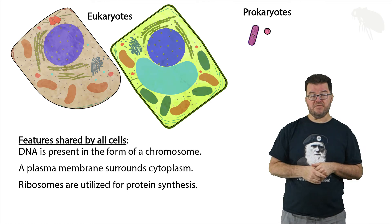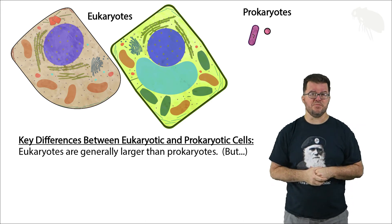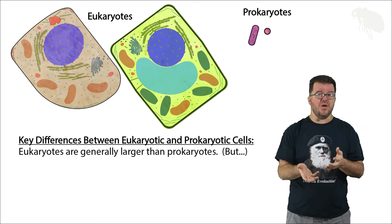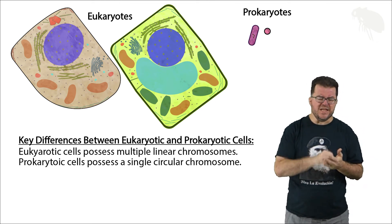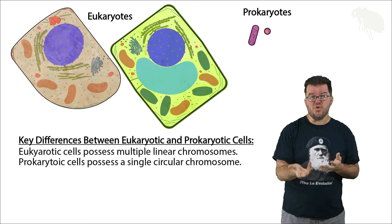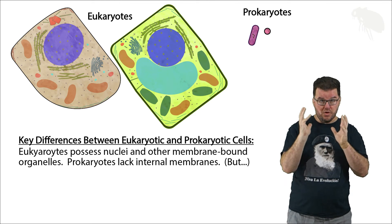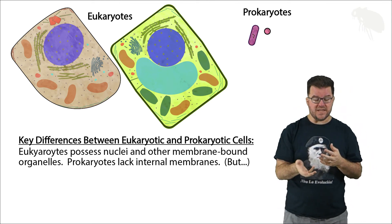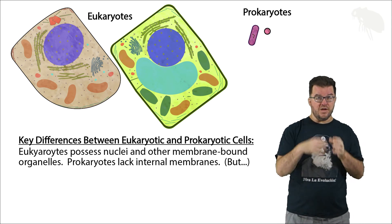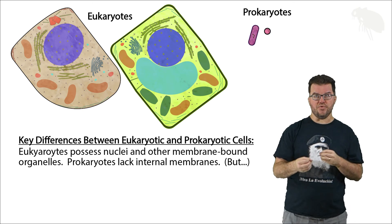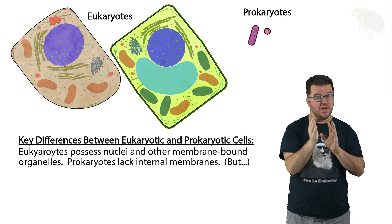In terms of differences: prokaryotes tend to be a lot smaller than eukaryotes, though the actual largest single-celled organisms we know of are prokaryotes — biology is always defined by the exception. In general, eukaryotes are much bigger. Second, eukaryotes have linear chromosomes and more than one, whereas prokaryotes have a single circular chromosome. Finally, eukaryotes have internal membranous structures — they have a nucleus where the chromosomes are found, walled off from the rest of the cell, as well as other membrane-bound organelles. Prokaryotes do not have a nucleus or membrane-bound organelles, except for the cyanobacteria, which do have some membranous compartments but still lack a nucleus.